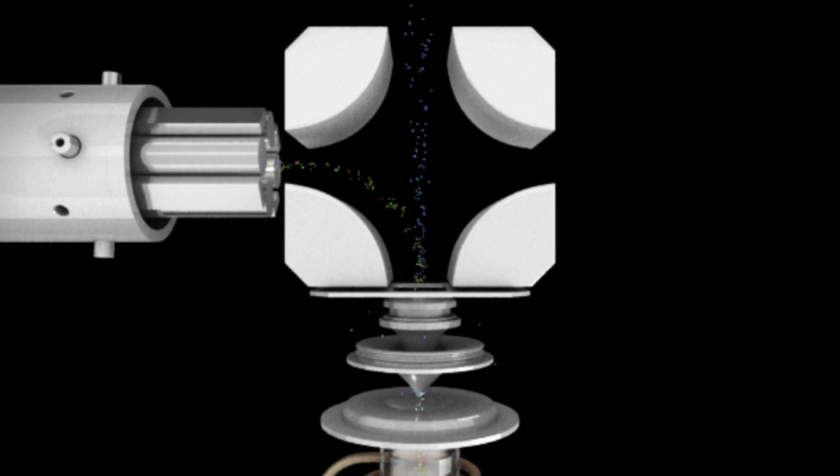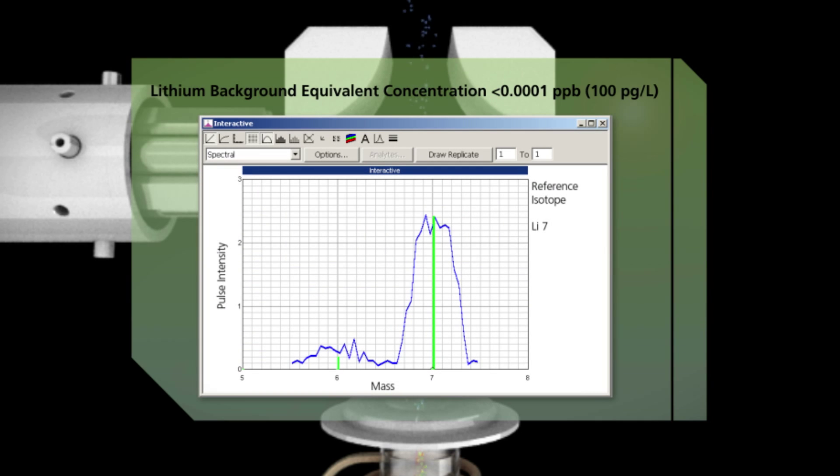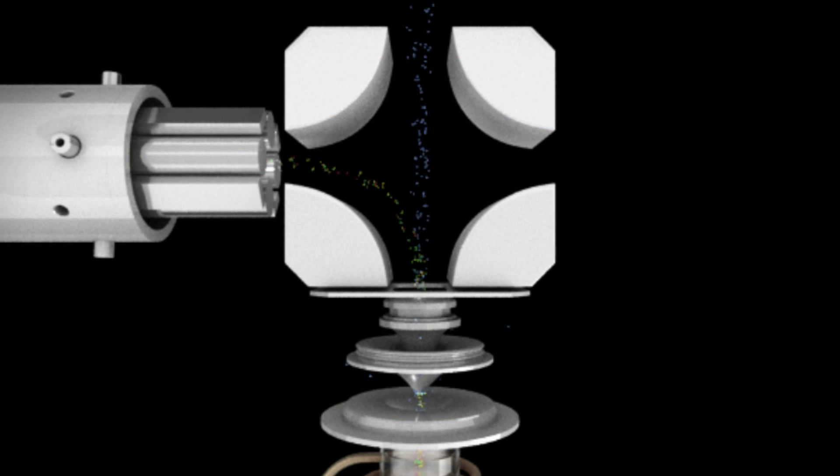Ions pass from this unique triple cone interface into the quadrupole ion deflector. The first of three quadrupoles in the instrument, the ion deflector turns the ion beam 90 degrees before it enters the patented universal cell and analyzing quadrupole, providing unparalleled stability and reducing background and interferences for the most accurate results.